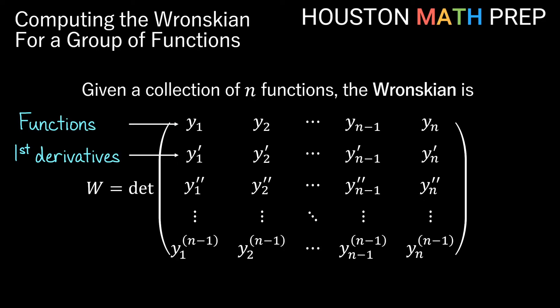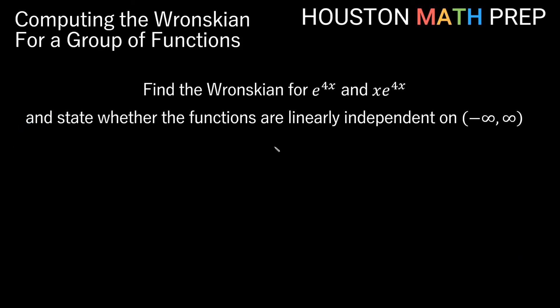If you're dealing with more than two equations — say you need three rows and three columns — then your third row would have the second derivatives of all your original functions. You keep going down as many rows as needed to make a square matrix, taking a higher order derivative each time. When our Wronskian is not equal to zero, that allows us to determine linear independence on a particular interval. Let's look at a few examples of computing Wronskians and determining linear independence.